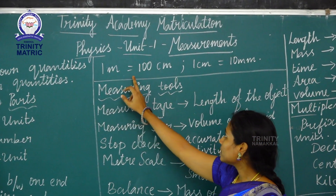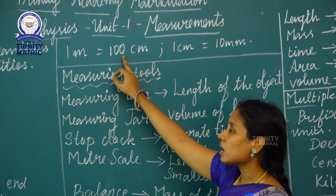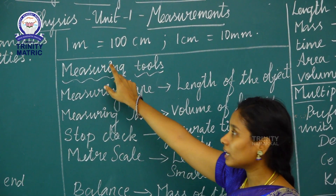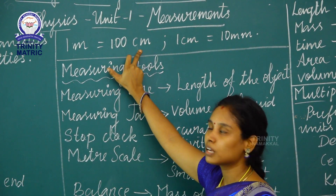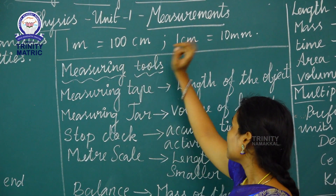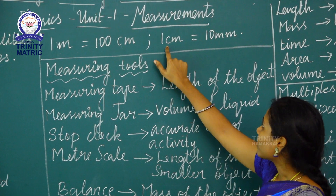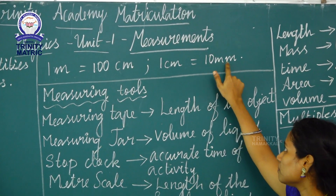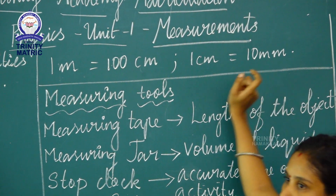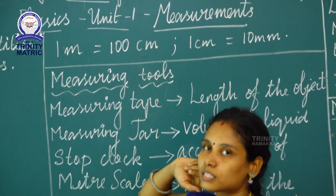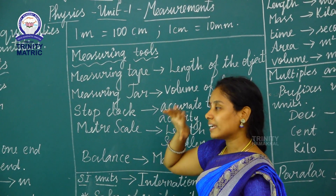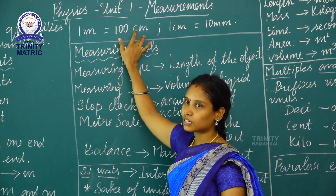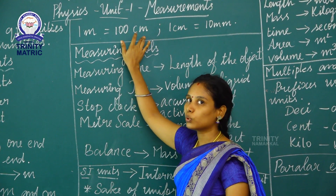1 meter is equal to 100 centimeters. 1 centimeter is equal to 10 millimeters.